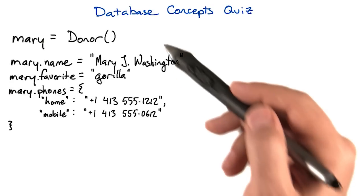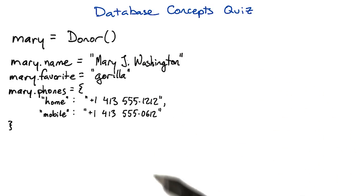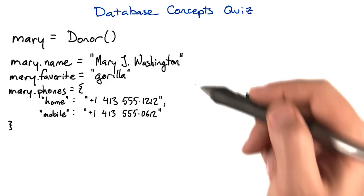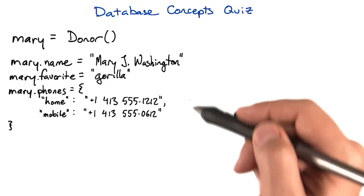One of our programmers has come up with an object-oriented description of a donor class. It has attributes for a person's name, their favorite animal, and their phone numbers.